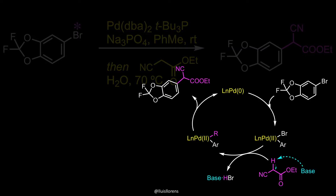The first step of this reaction is the oxidative addition. The palladium catalyst, with its ligands, inserts itself into the carbon-halogen bond and gets oxidized from palladium 0 to palladium 2. Then, the base abstracts the acidic proton of the ethyl cyanoacetate, generating an enolate that displaces the halogen in the palladium complex. Finally, reductive elimination generates the final product and restores the catalyst for the next cycle.